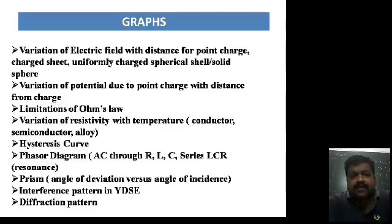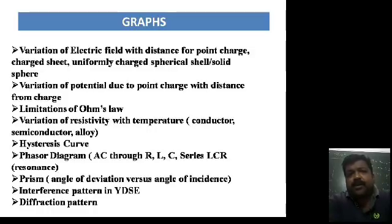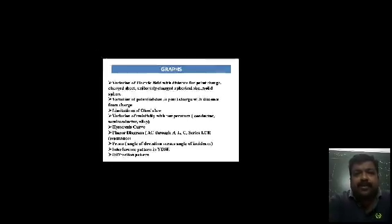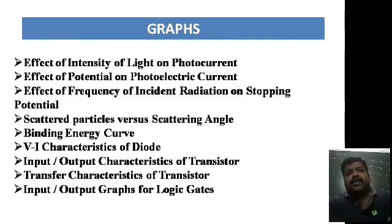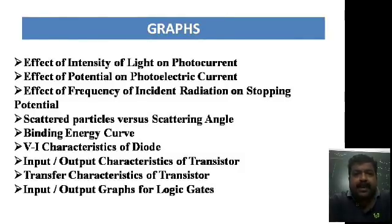The prism angle of deviation versus angle of incidence graph is also important. Then: the interference pattern in Young's double slit experiment — the intensity graph for fringes; the diffraction intensity graph for fringes obtained; photoelectric effect — effect of intensity of light on photocurrent, effect of potential on photoelectric current, effect of frequency of incident radiation on stopping potential; the scattered particles versus scattering angle graph from Rutherford's alpha particle scattering experiment; and the binding energy curve — very important for its application to both fission and fusion reactions.